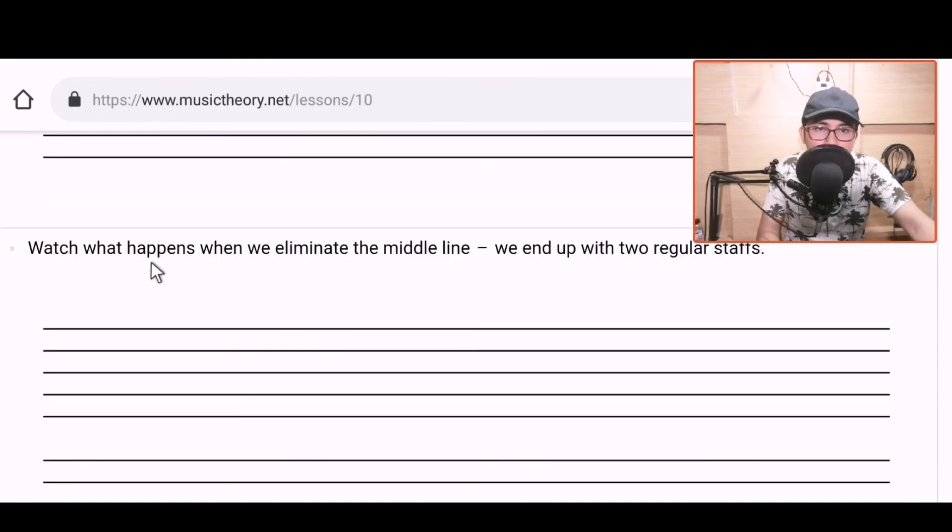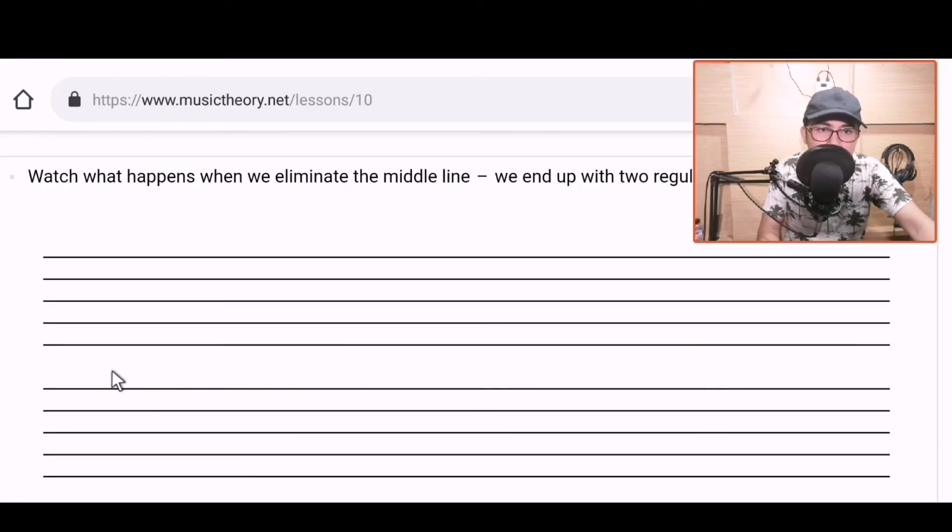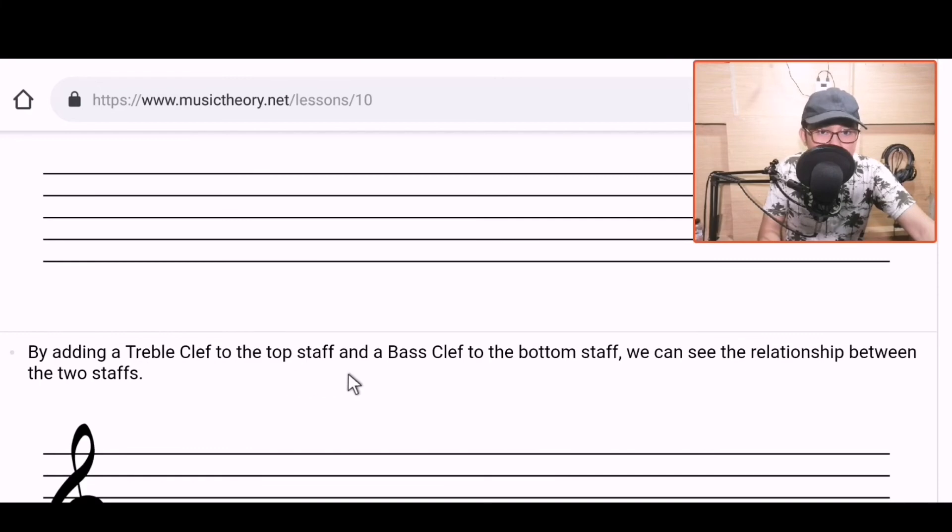So next slide is: what happens when we eliminate the middle line? We end up with two regular staves. So this is what happened. We have two regular staves: top and bottom. One, two, three, four, five lines. And then one, two, three, four, five lines at the bottom. So what was done is they removed the line in the middle. From 11 lines, we went to 10 lines. So we have the staff at the top, we have the staff at the bottom. By adding a treble clef to the top staff and the bass clef to the bottom staff, we can see the relationship between the two staves.